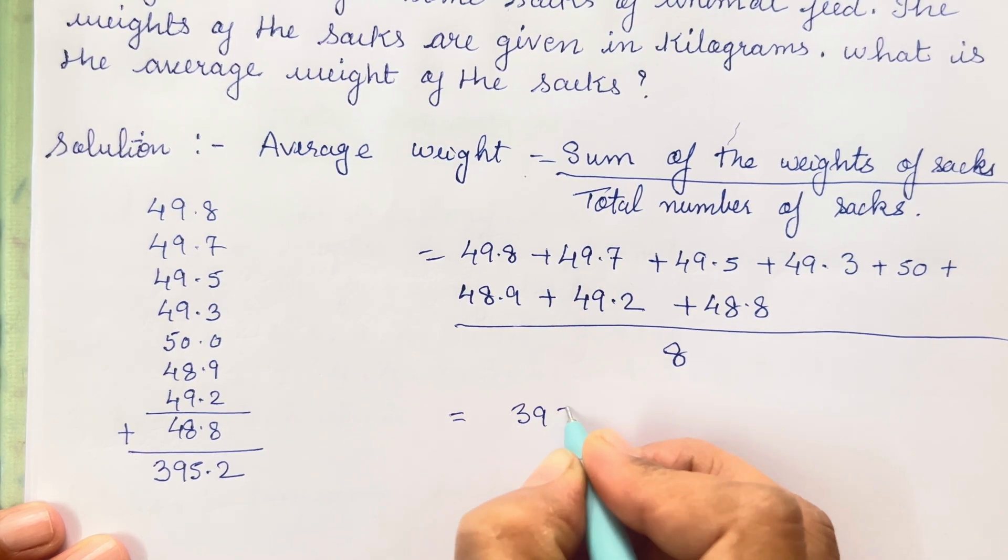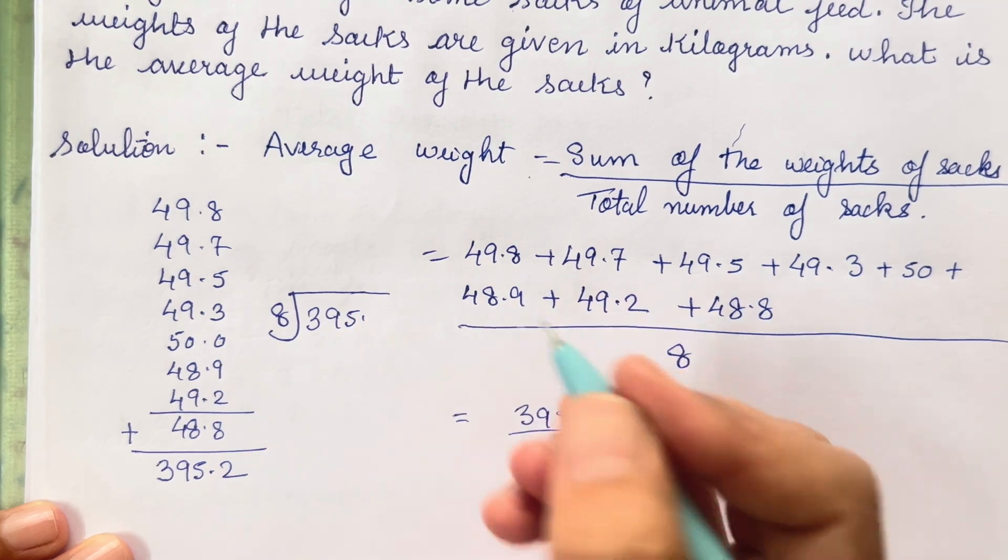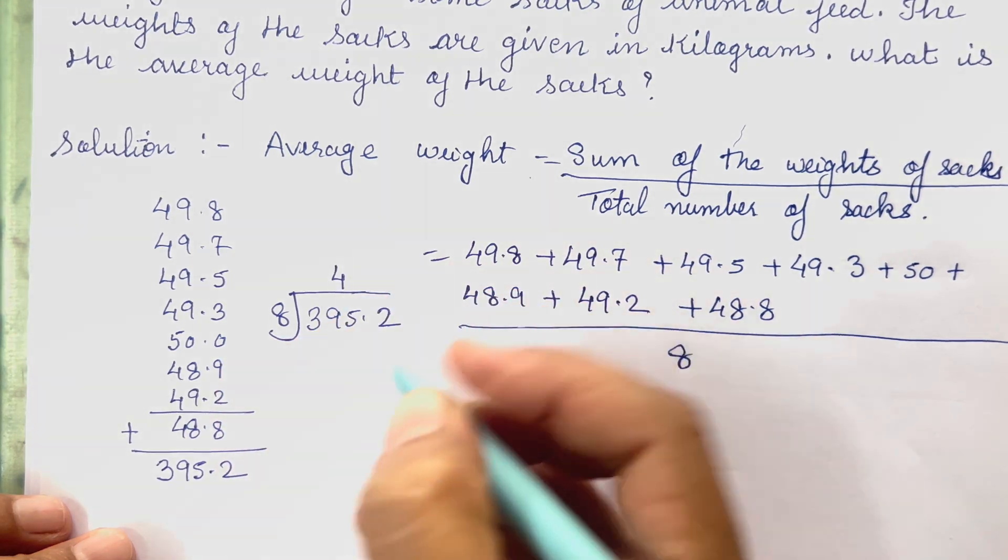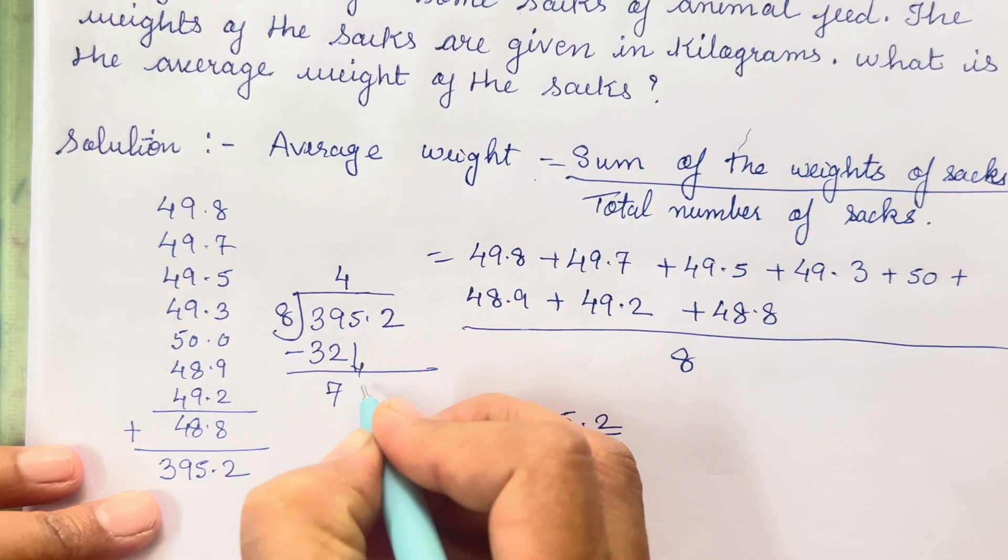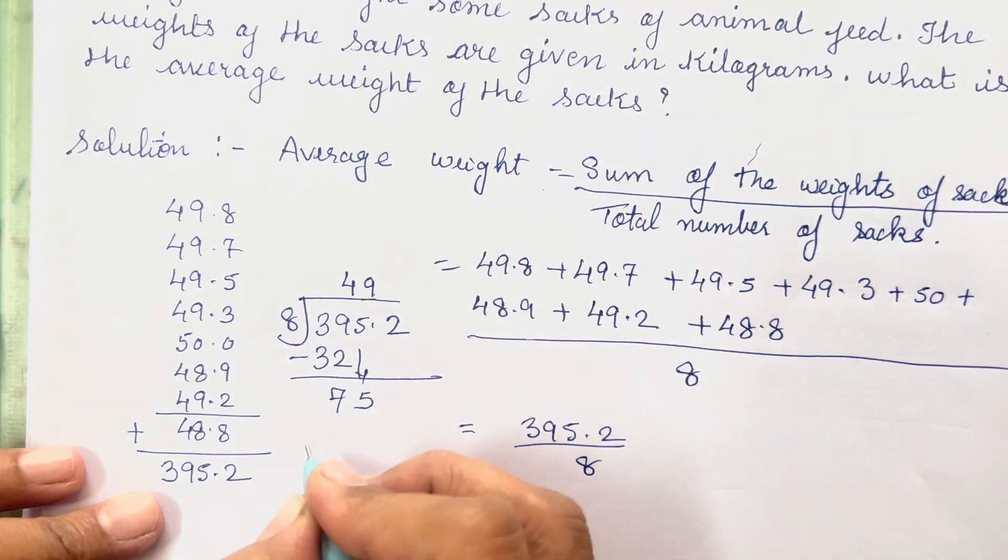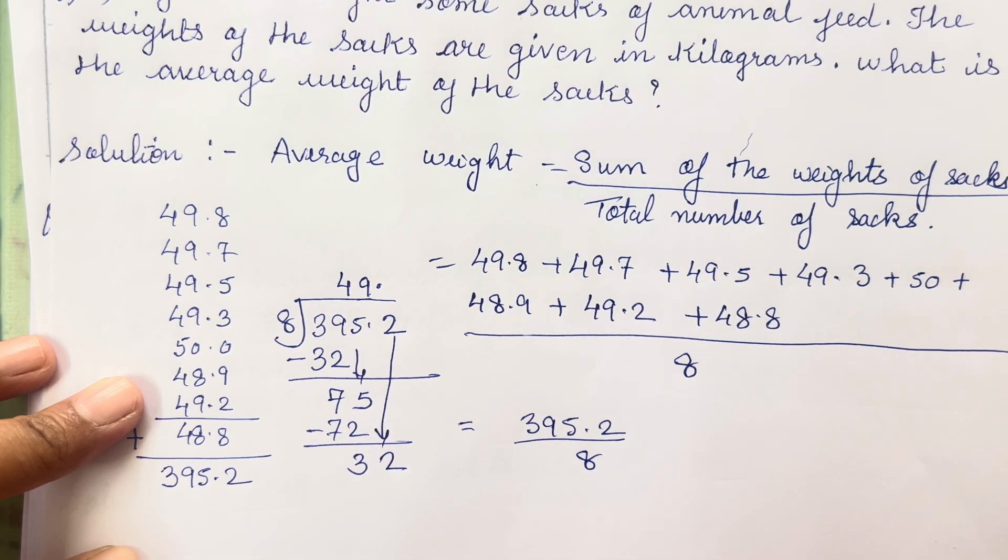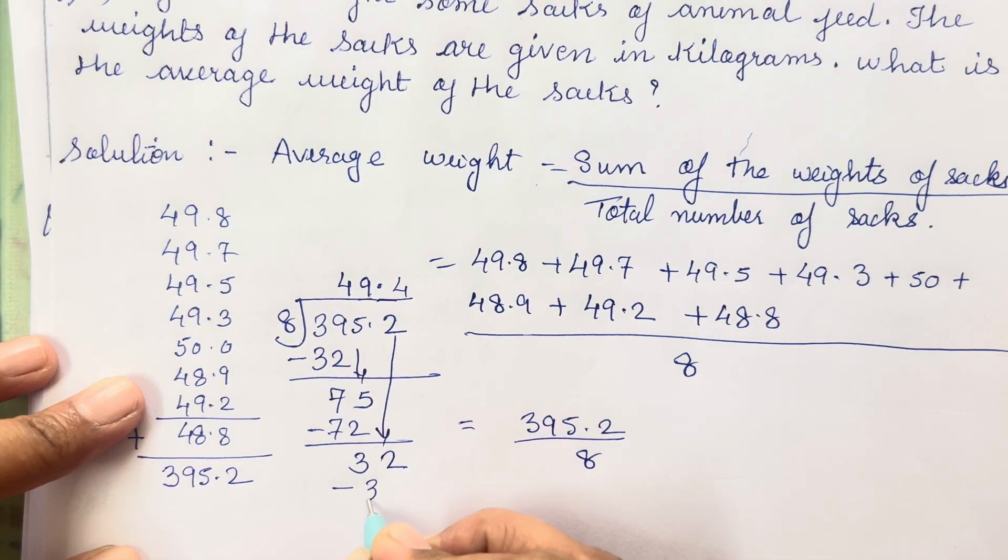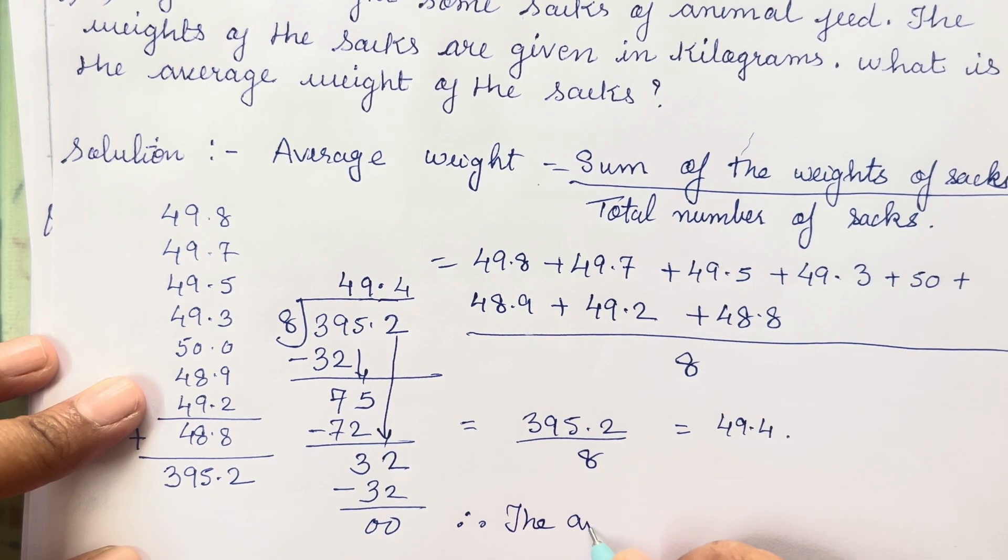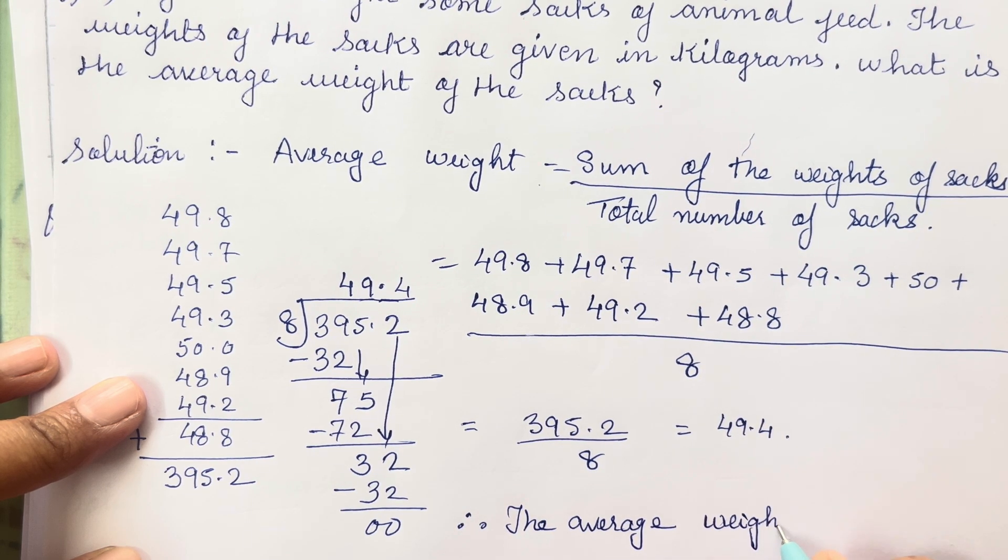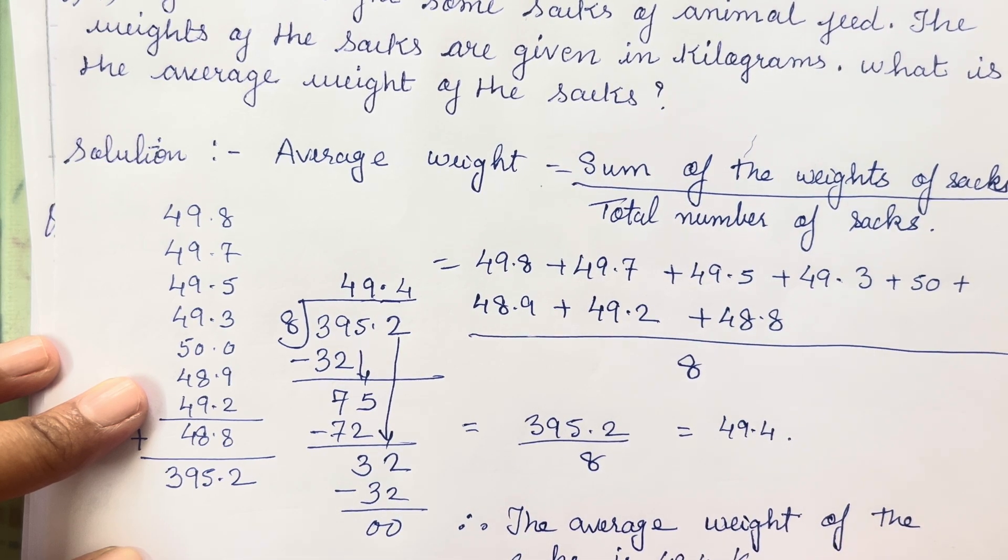So 395.2 divided with 8. Again division I am going to show you. 8 into 395.2. So 8, 4's are 32. 8, 9's are 72. Add one decimal point, so I am going to take this 2 over here. 8, 4's are 32. So you are going to get 49.4. Therefore the average weight of the sack is 49.4 kg.